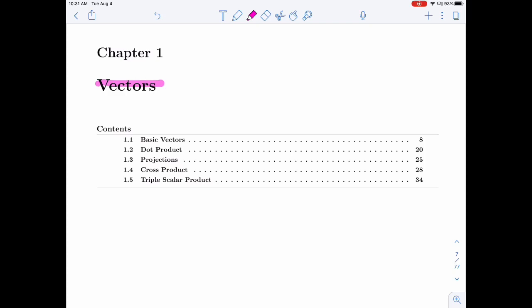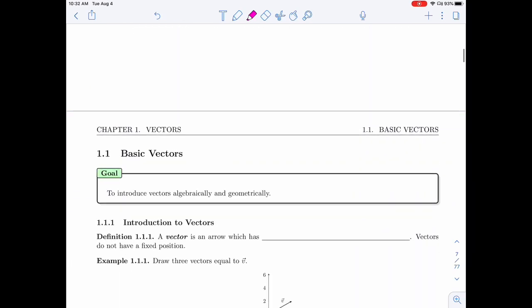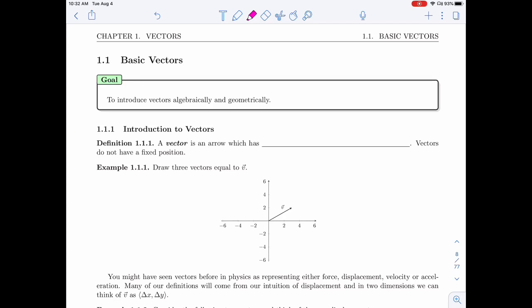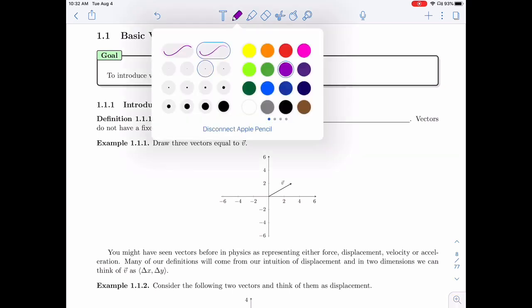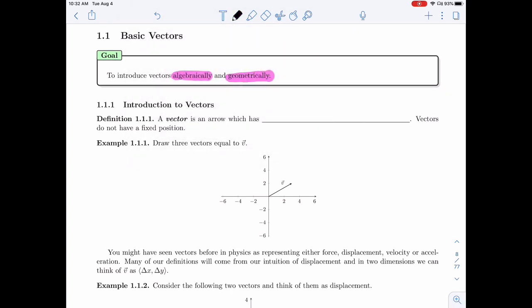So before we get to all of these interesting things, we have to start with introducing vectors. So in this video, we'll be talking about basic vectors. The goal of this section is to introduce vectors both algebraically and geometrically. When we talk about vectors, we'll be saying that a vector is an arrow which has two pieces of information. It needs a length and it needs a direction. Vectors do not have a fixed position. They don't live anywhere specific.